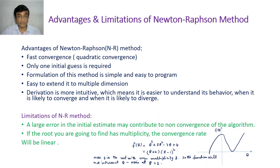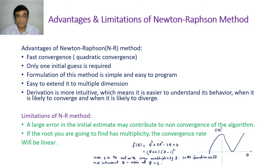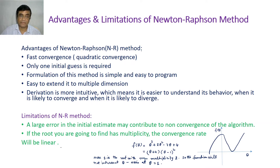However, some limitations exist. If you make a large error in the initial estimation, the algorithm may not converge. The solution should be in the neighborhood of the initial guess. Also, if you are finding roots that have multiplicity, the convergence rate will no longer be quadratic — it will be slow and take a lot of time.